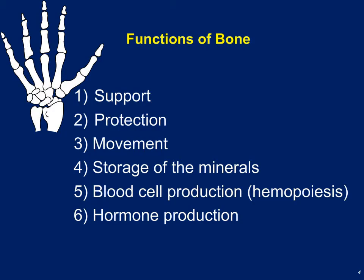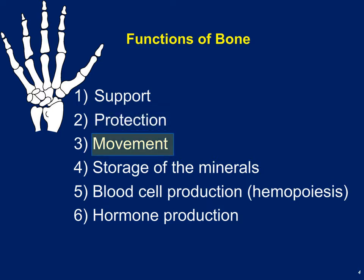The skeletal system has many different functions, some of which are obvious and some you probably aren't familiar with. One you are familiar with is support — the skeletal system is basically a scaffolding of hard parts that helps to hold our body erect. Another function is protection: the skeletal system protects very delicate organs, like the brain protected by the skull, and the thoracic organs — the heart and lungs — protected by the rib cage. Movement is also a very important function, because the bones are basically levers to which our skeletal muscles are attached, allowing for movement and lifting.